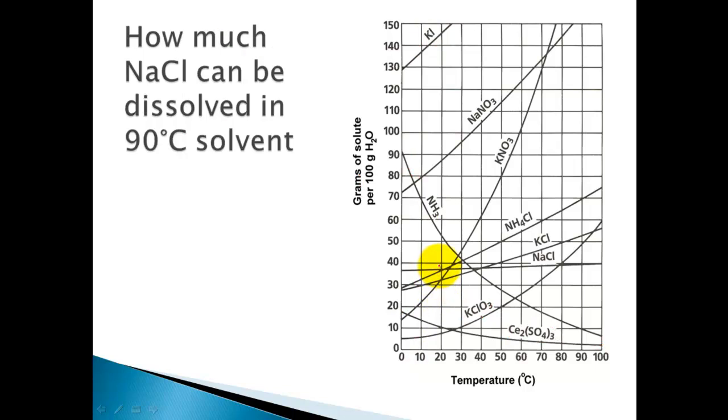Check out this question. How much NaCl can be dissolved in 90 degrees solvent? Let's find the NaCl line. This line right here is NaCl. You take 90 degrees and go up, and the most I can possibly dissolve is that point right there. I follow that over this way, and it lines up perfectly with 40 grams. So at most, if I have 100 grams of water, the most amount of salt I can dissolve is 40 grams.